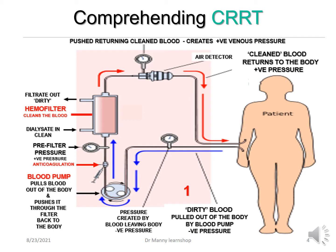To summarize continuous renal replacement therapy: one, dirty blood is pulled out of the body by the blood pump via negative pressure; two, it goes through the haemofilter which cleans the blood, depending on the therapy and mechanism being employed; and three, the clean blood then returns to the body via positive pressure — it's pushed back in again.